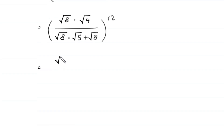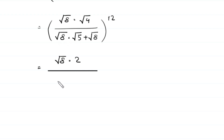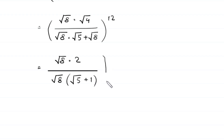Next, square root of 8 times square root of 4 gives 2. From the denominator we can factor out square root of 8 as a common factor, leaving square root of 8 times bracket square root of 5 plus 1, whole to the power 12.